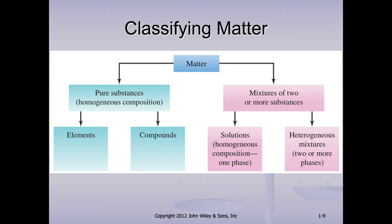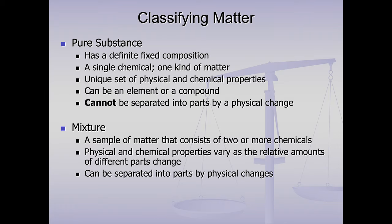Matter is traditionally broken up into two major subclasses: pure substances and mixtures. So pure substance has a definite composition, it's one thing and has a unique set of properties, and it cannot be separated by a physical change. And a mixture is just more than one thing in the same container. Another way of saying it is a mixture is more than one thing in the same container, and each thing in that container keeps its own characteristics, where a pure substance has one set of characteristics.